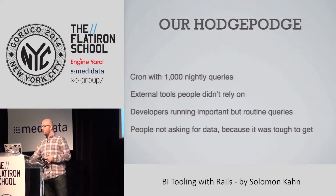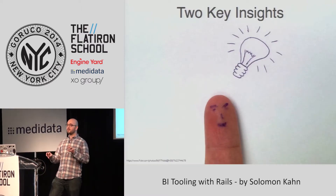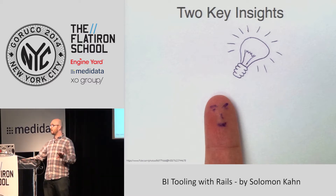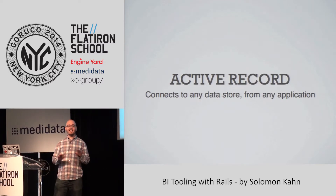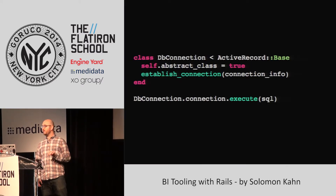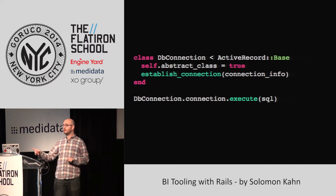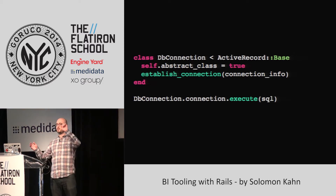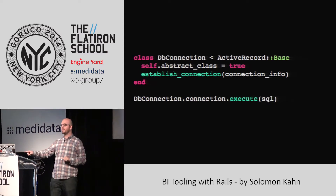We wanted to solve this problem. There were two key insights from Rails that allowed us to build an application, which we just open sourced. The first was that ActiveRecord can connect to any datastore from any application. If I define a class that inherits from ActiveRecord Base, set abstract class equal to true, and establish a connection, from any Rails app in the world I can connect to any database and run queries on it.